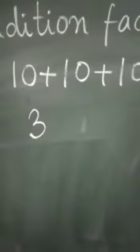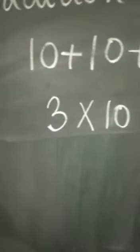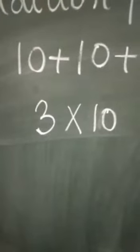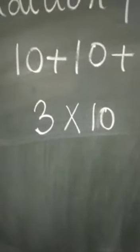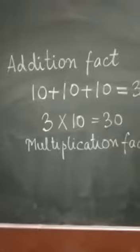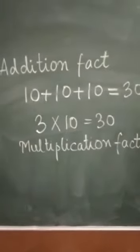And which number is repeated? That is 10. So we will write 3 multiplied by 10 equals to 30. So this is the multiplication fact of the given addition fact.